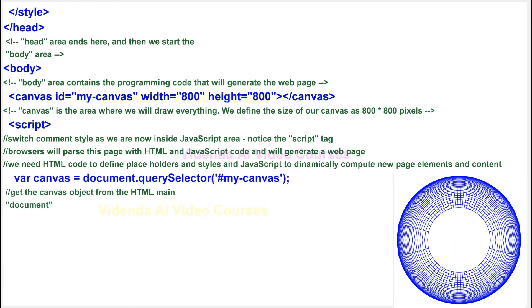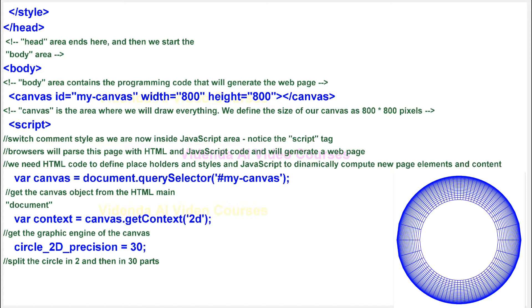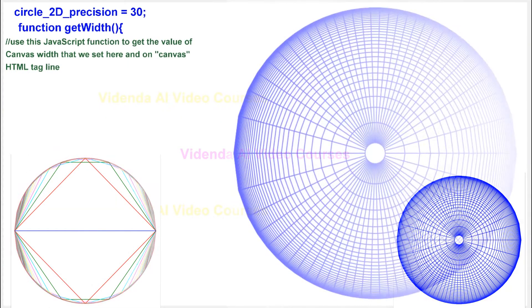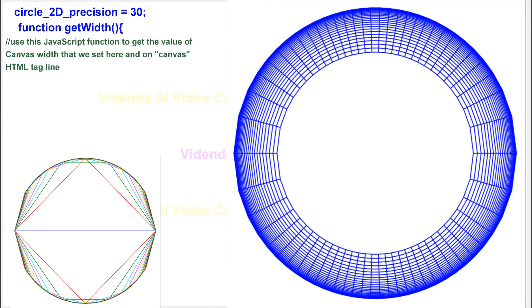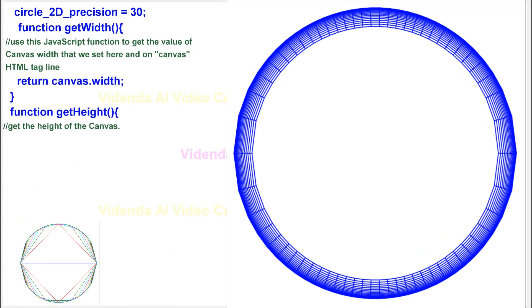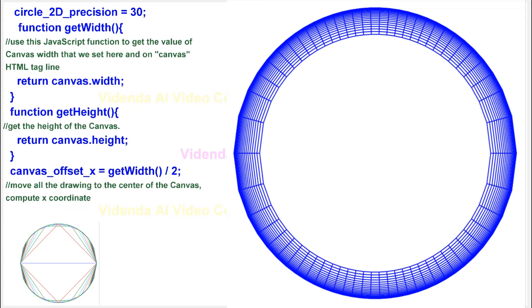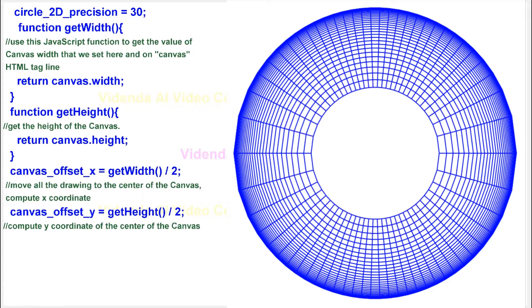Get the canvas object from the HTML main document. Get the graphic engine of the canvas. Split the circle in two and then in 30 parts. Use this JavaScript function to get the value of canvas width that we set here and on canvas HTML tagline. Get the height of the canvas. Move all the drawing to the center of the canvas. Compute x coordinate. Compute y coordinate of the center of the canvas.